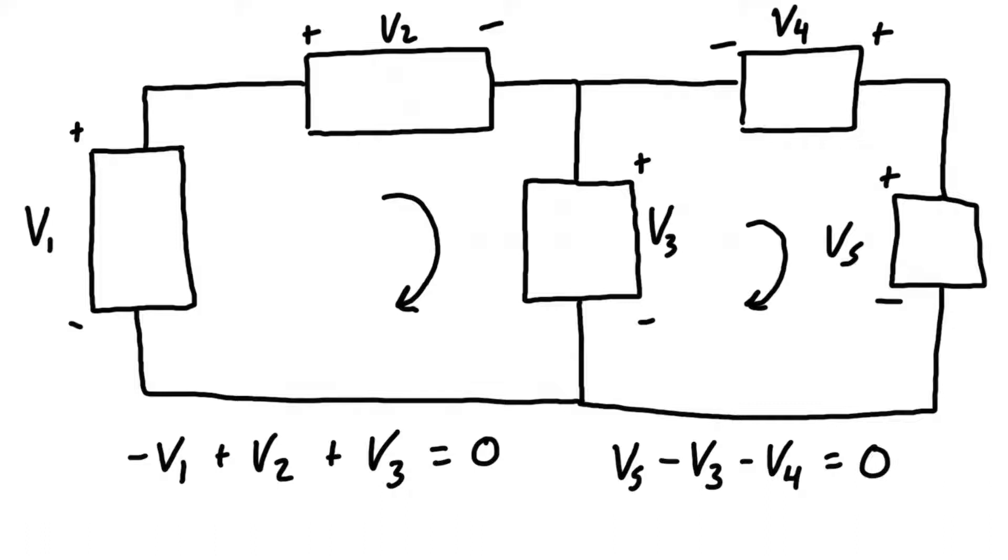And that all has to be equal to zero. This is going to be a very useful tool for us when we get further into analyzing circuits. It's just one of the many things that we have available to help solve for unknowns. So to keep this introduction simple, let's get rid of the right-hand loop.